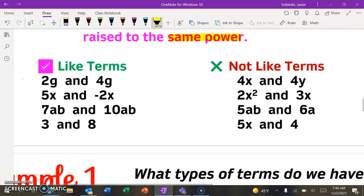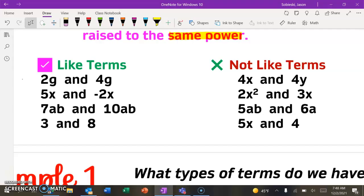So here are some examples of what like terms are and are not. So if you have 2g and 4g, well, they have the same variable and they're both raised to technically the first power, so those are like terms. But if you go over to the right side, 4x and 4y, well, obviously x and y are different variables, so those could not be combined. But if we wanted to combine 2g and 4g, that would literally just give us 6g.